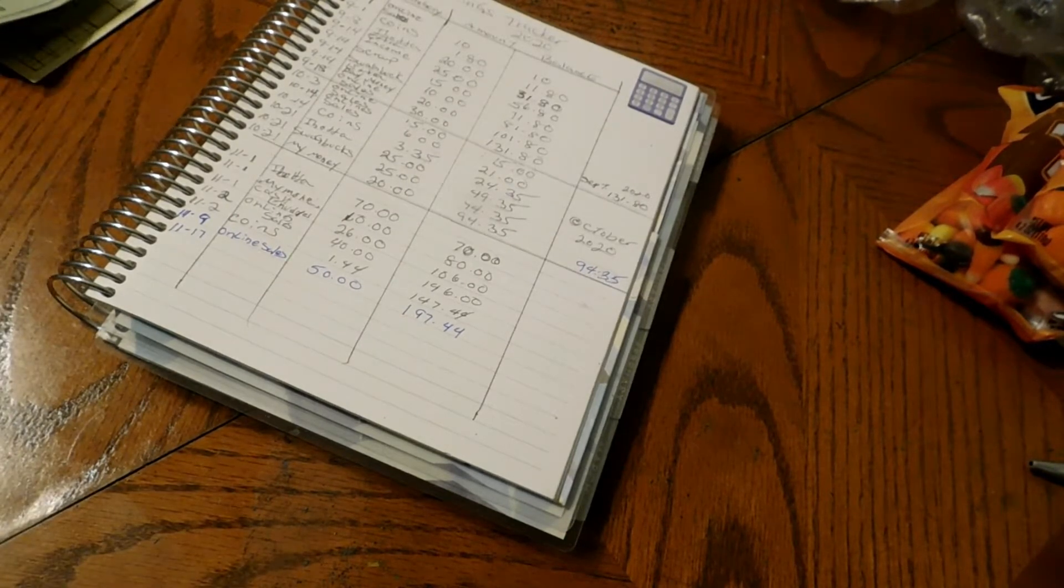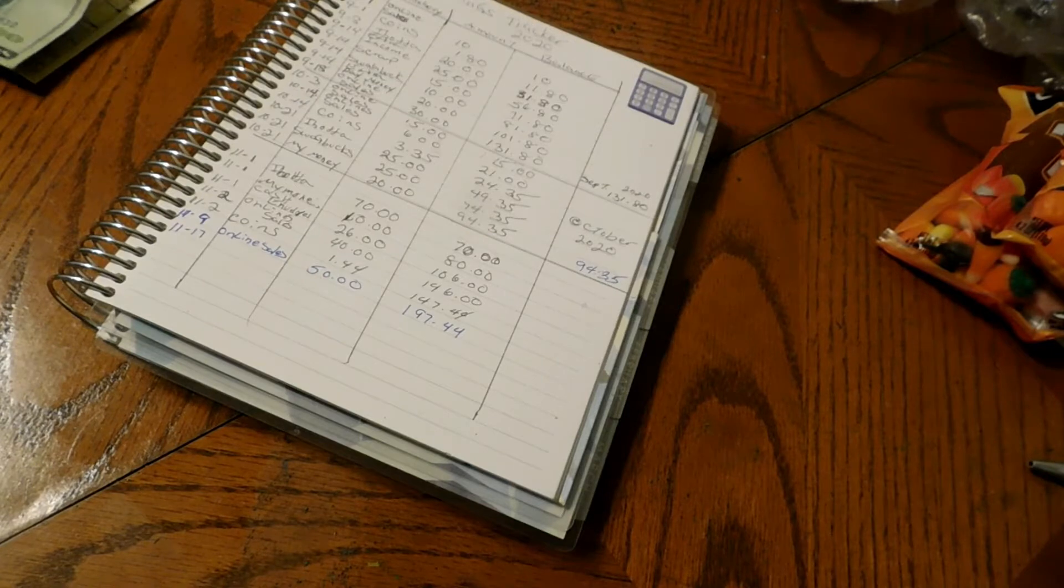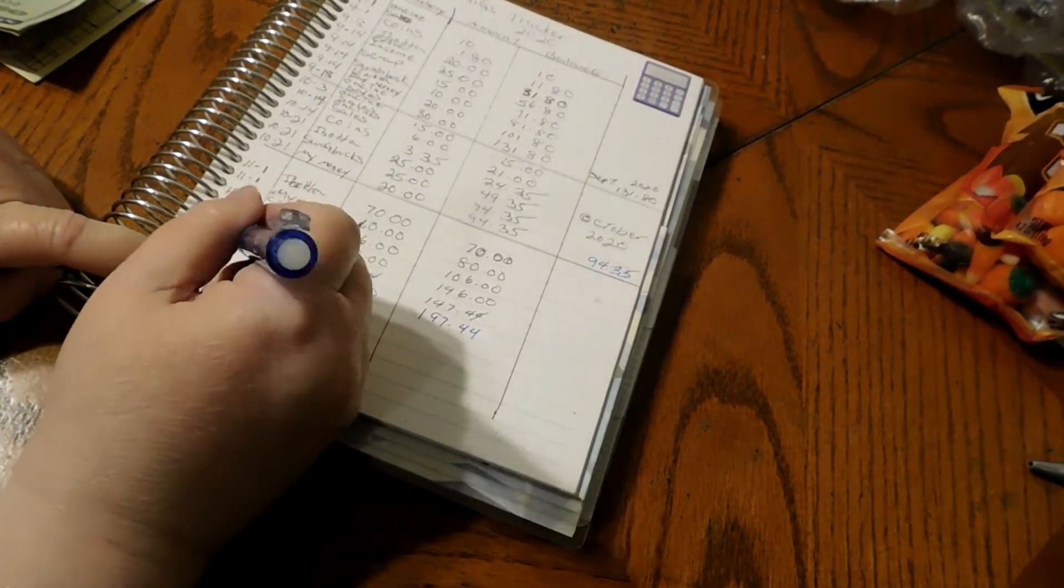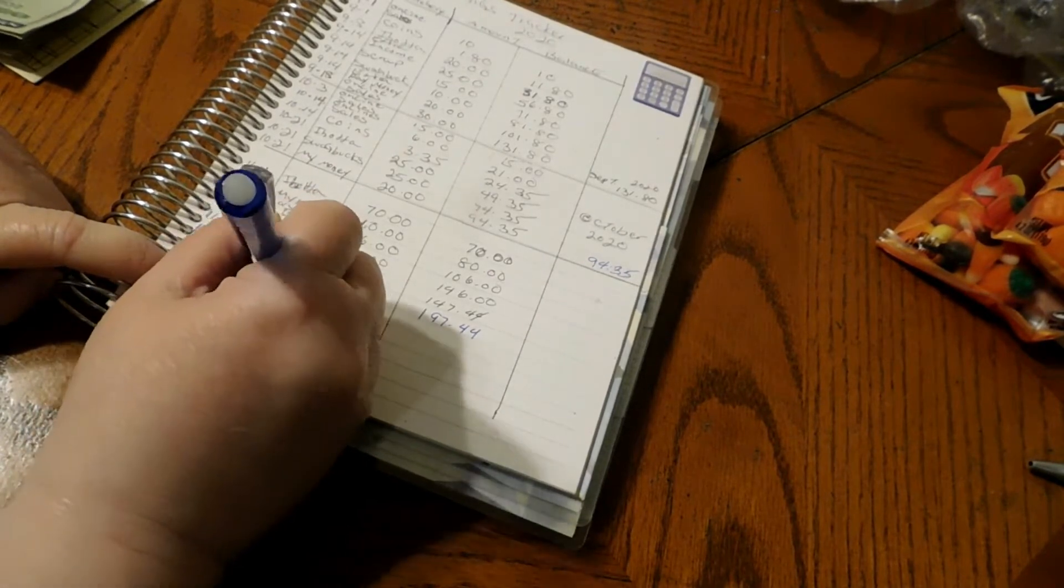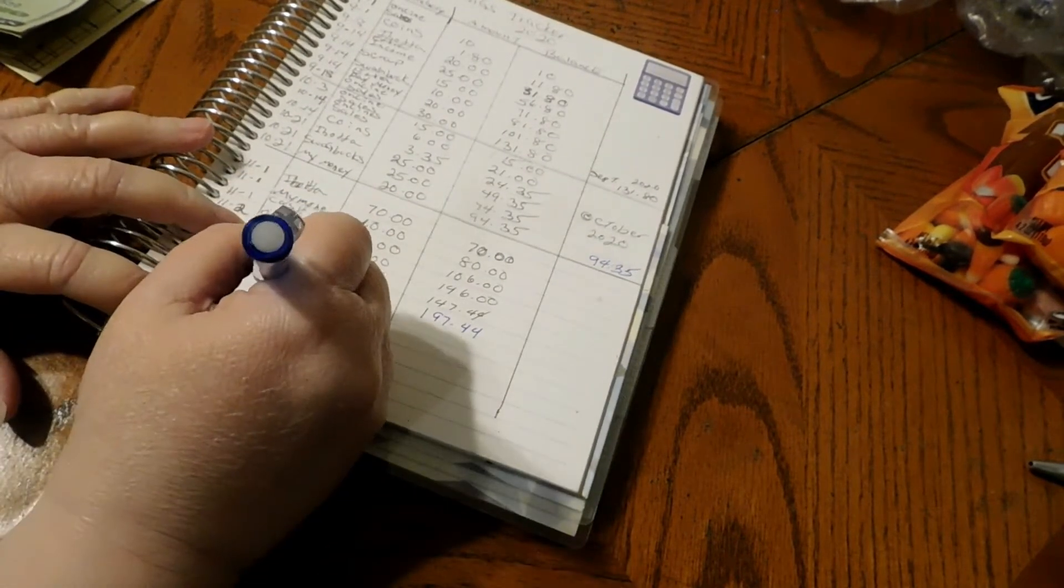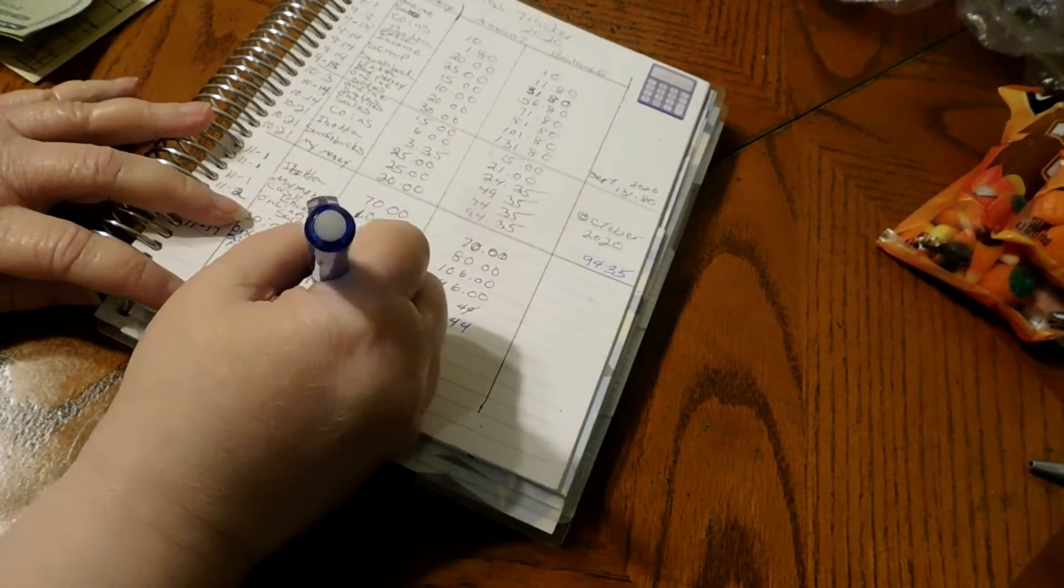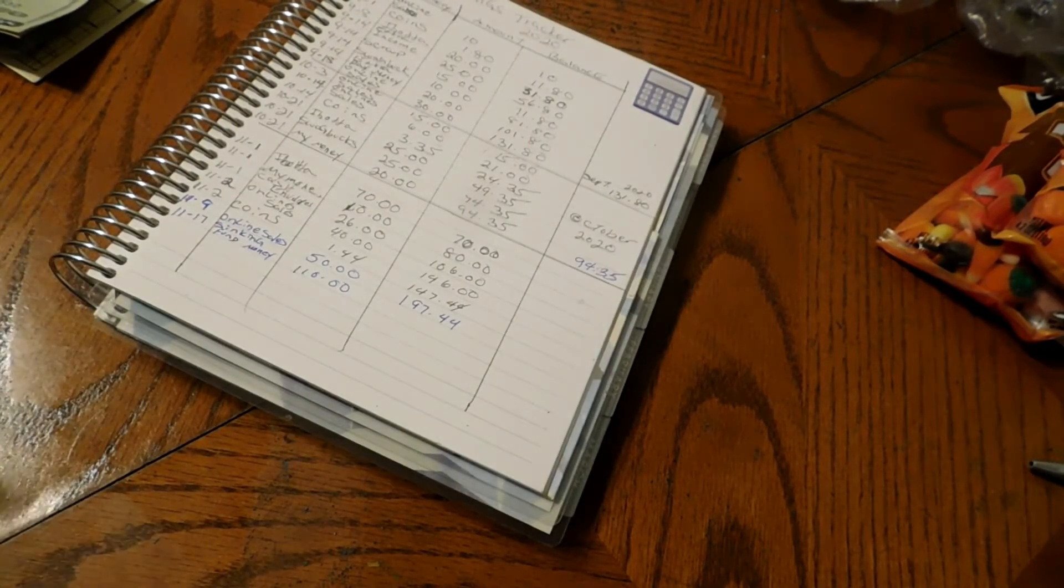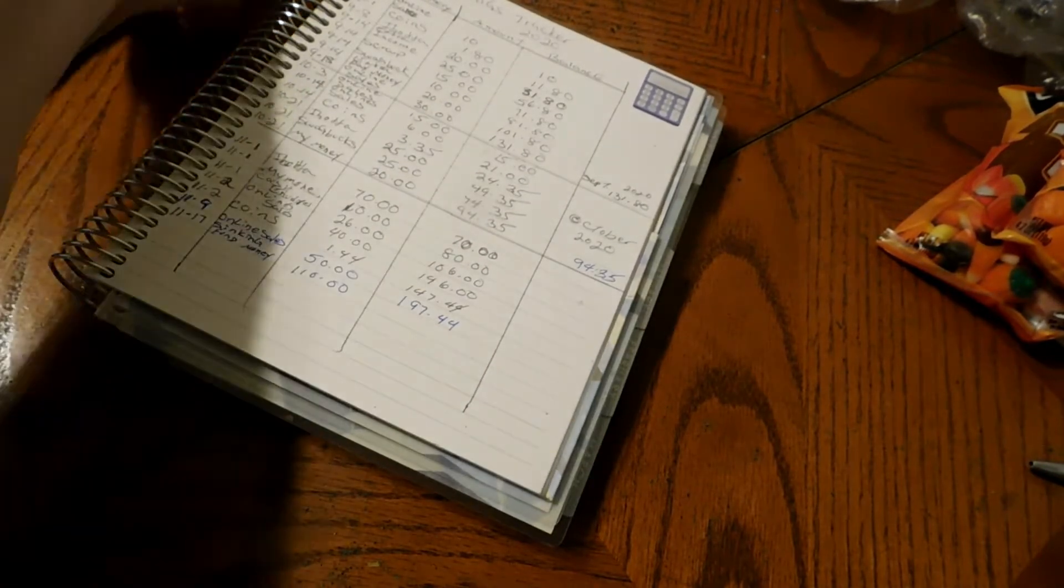So all that money that we took out of the other envelopes came to $110. We're going to write 'sinking fund money' here because that's where we took it out of the envelopes. That is $110. So let's add that to the amount we had, $997.